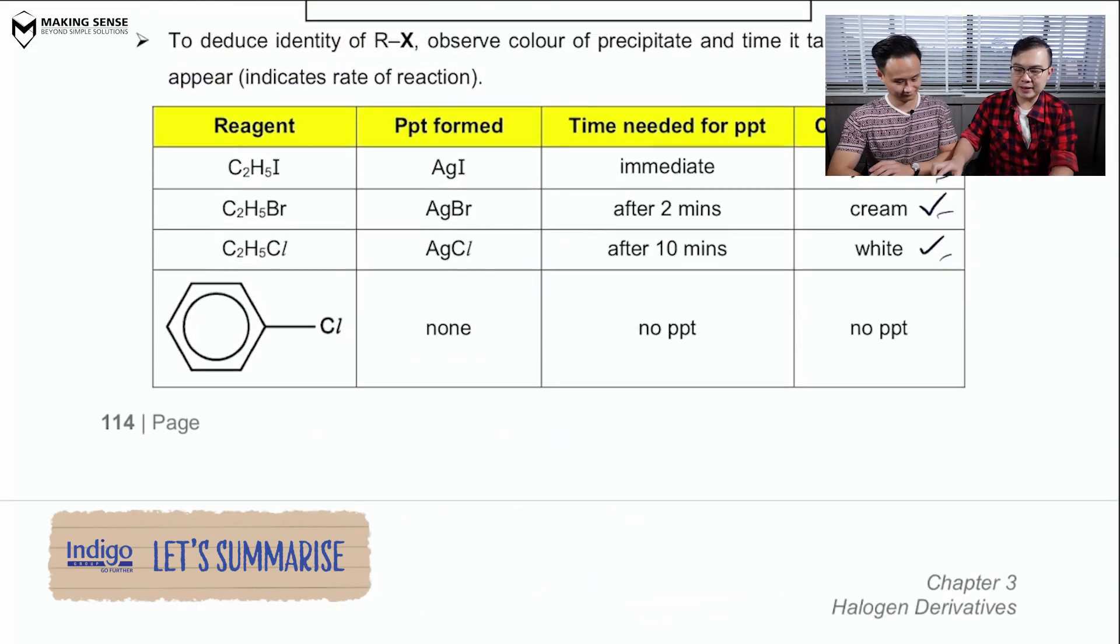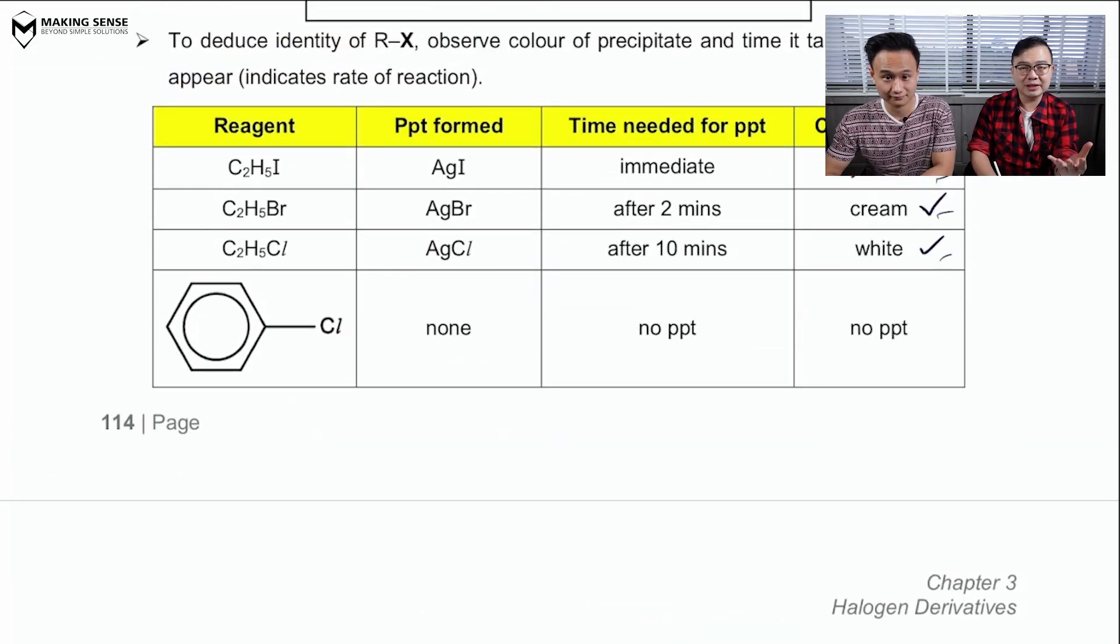Alright. That's great. So, let me summarize this for you. So, in general, you say that, depending on what is the color of the precipitate, you'll be able to tell that it must be a halogenoalkane, and the color of the precipitate will tell me the identity of the halogen present in the halogenoalkane. In the event that you don't get any precipitate, then we can safely conclude it must be a halogenoarene. Is that right? Exactly.